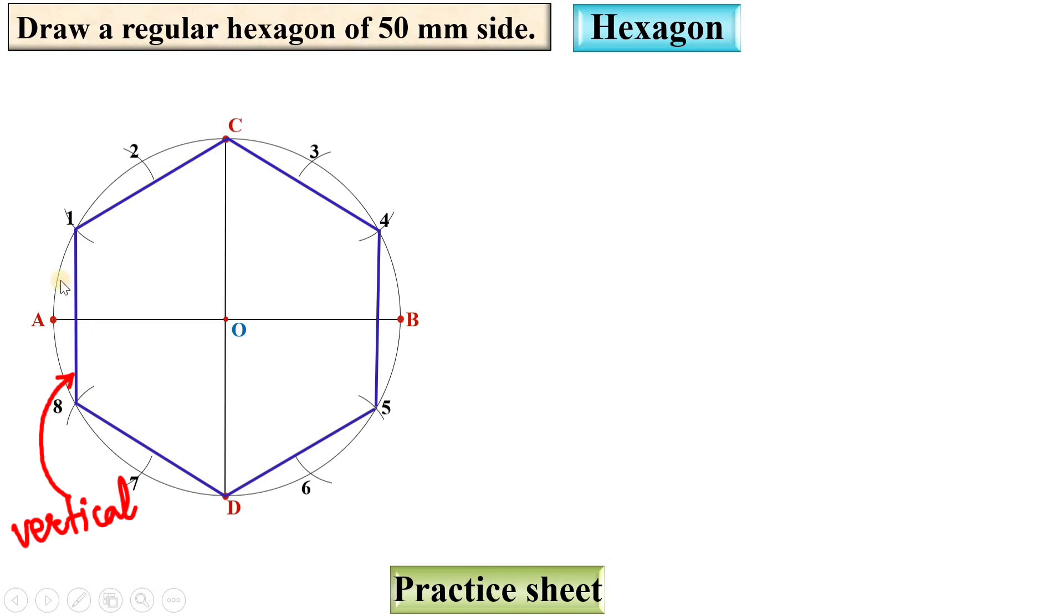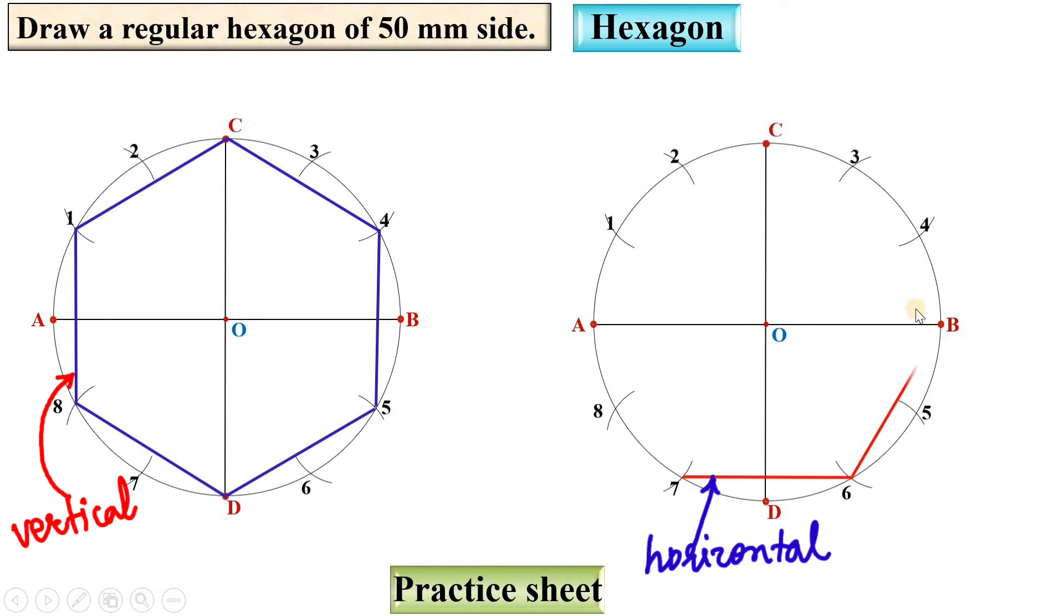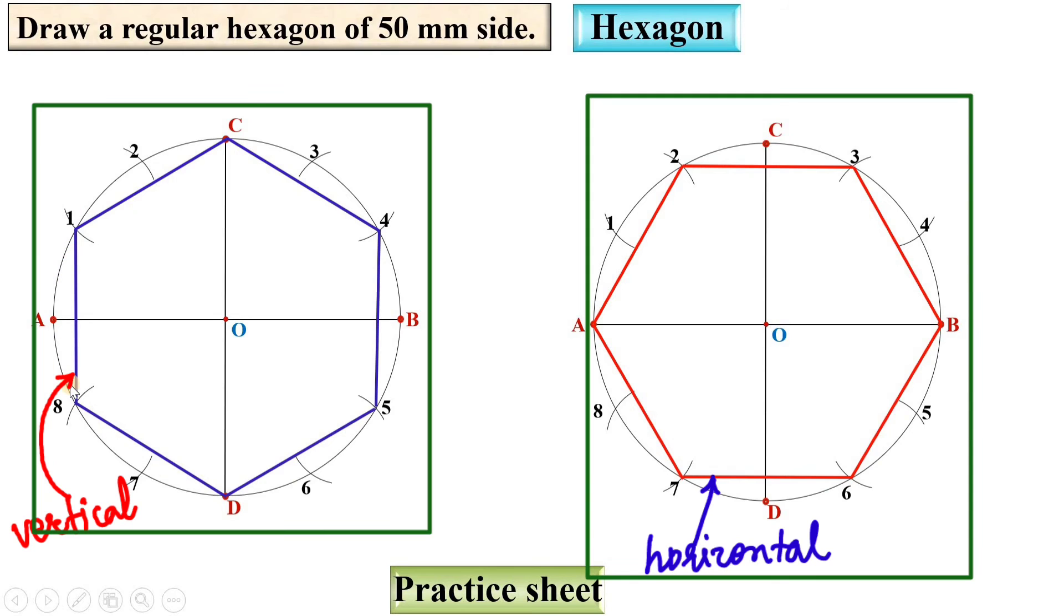Now here you can see this is a vertical line. You can draw the hexagon like this also. Depends on the requirement, you can draw the hexagon in this position or in this position.